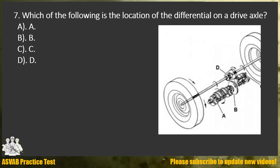Question 7. Which of the following is the location of the differential on a drive axle? A. A. B. B. C. C. D. D.